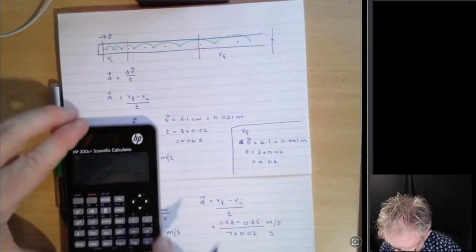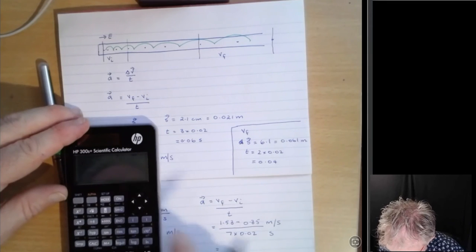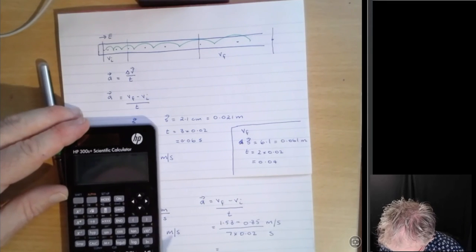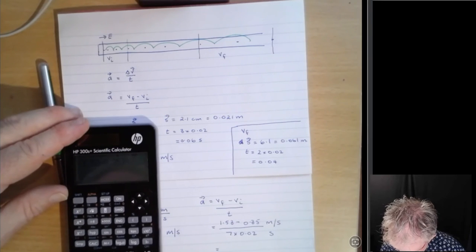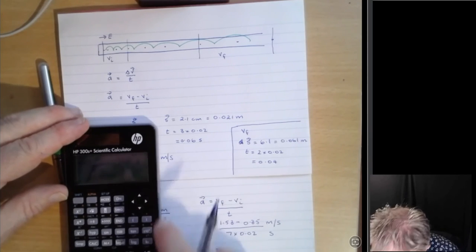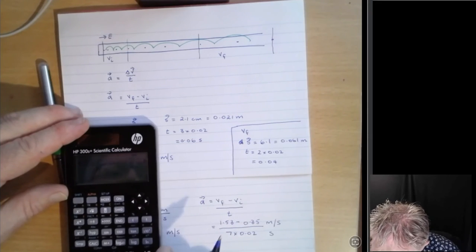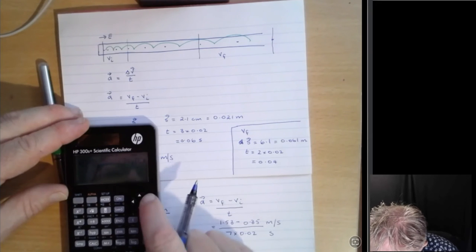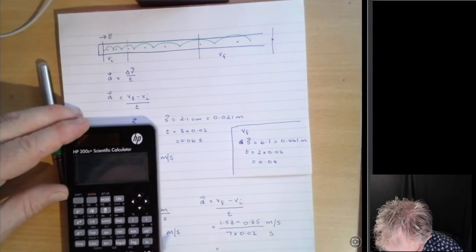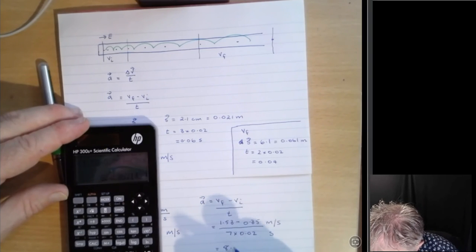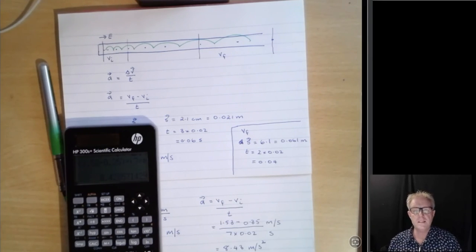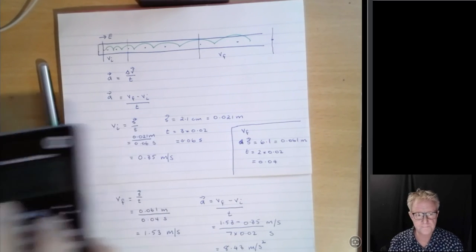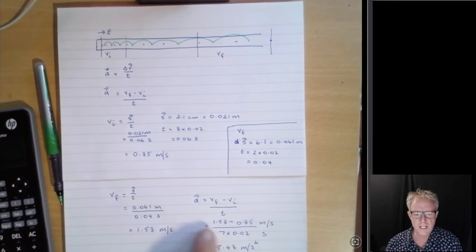So let's put that in the calculator. So we have, and let's just try and do this in one whole step, 1.53 minus 0.35 bracket, and we divide that there by the bottom calculation, 7 times 0.02. And let's press equals, and it says it's 8.43 meters per second squared. So that is the acceleration for that particular strip. I hope you can just see it down the bottom there.